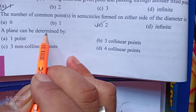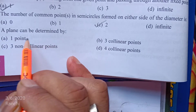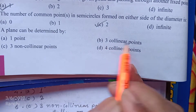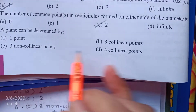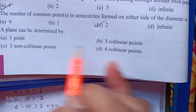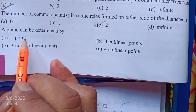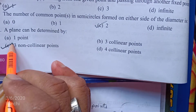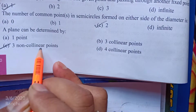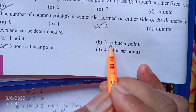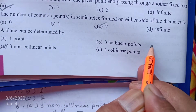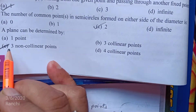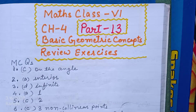A plane can be determined by: one point, three collinear points, three non-collinear points, or four collinear points. Plane can be determined by three non-collinear points. Three non-collinear points se hum plane ko represent kar sakte hain. Three collinear points ek hi line mein hote hain, toh plane nahi banega.